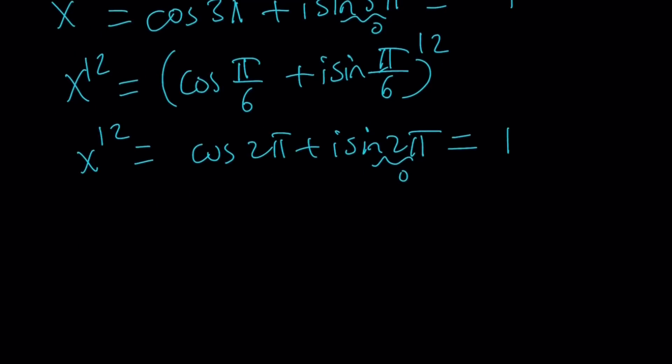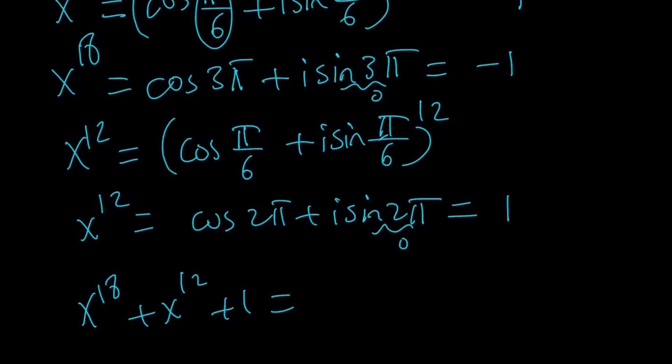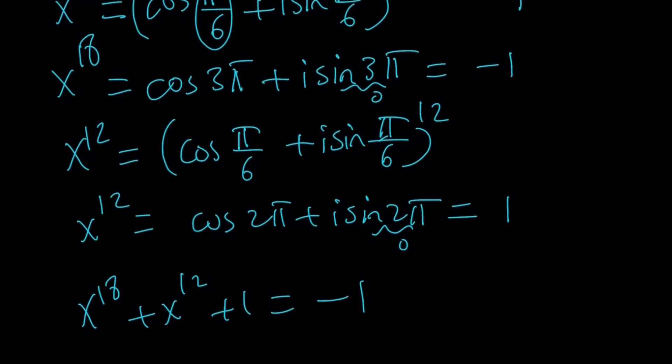Therefore, we get the following, x to the 18th power plus x to the power 12 plus 1, x to the 18th power is equal to negative 1, x to the power 12 is positive 1, and positive 1 is positive 1, all the time, the answer is 1.